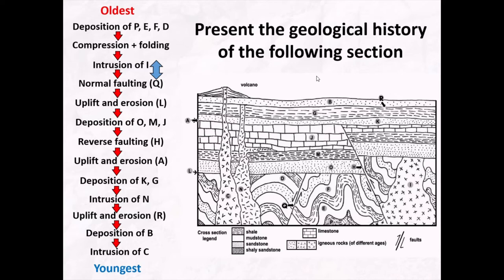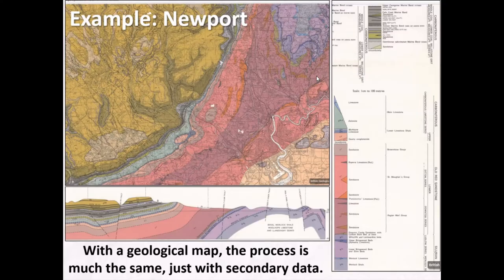That's a fairly in-depth exercise on cross-cutting relationships. Have a go at it again — see if you can put these things in order and if the order makes sense to you. If not, feel free to re-watch this part of the video. Apart from using cross-sections, you can also use maps to understand the geological history. We've seen this example — we've been to the Newport Sheet before — the one with this beautiful plunging antiform with two unconformities either side of it. In much the same way as we've just done, you can reconstruct a geological history from a geological map.